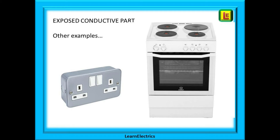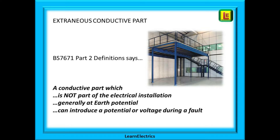Here are two more examples of exposed conductive parts: a metal clad socket and an electric cooker. Both have electricity going to them and both have outer metallic parts that are normally at zero volts but may become live during a fault.